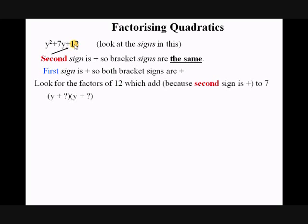We look for the factors of 12 which add to 7 — it's 'add' because that sign is a plus. The factors of 12 which add to 7 give us the answer: y² + 7y + 12 = (y + 3)(y + 4). Note these brackets could be either way around — (y + 4)(y + 3) — because multiplication order doesn't matter.